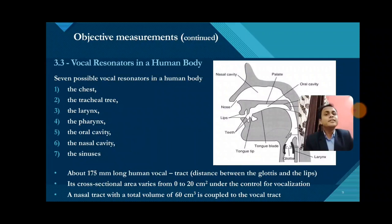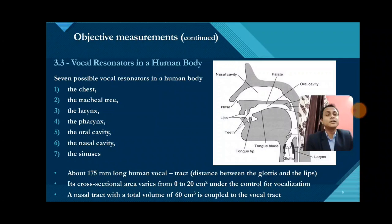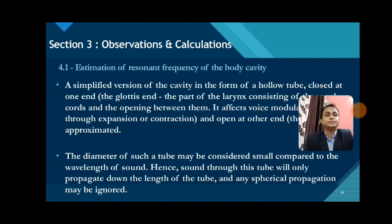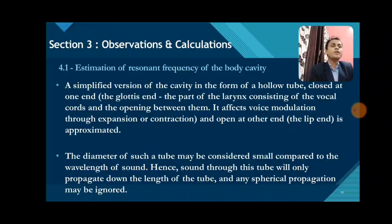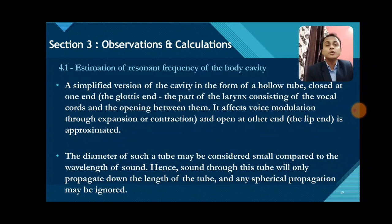There are seven possible vocal resonators in a human body: the chest, the tracheal tree, the larynx, pharynx, oral cavity, nasal cavity, and the sinuses. The distance between the glottis and the lips, which is the human vocal tract, is around 175 mm. The cross-sectional area is about 0 to 20 cm² under control for vocalization, and the total volume of the nasal tract is around 60 cm³, which is coupled to the vocal tract. A simplified version of the cavity in the form of a hollow tube closed at one end — the glottis end — and open at the other end — the lip end — was considered. The diameter of such a tube is small compared to the wavelength of sound, so sound through this tube will only propagate down its length and spherical propagation may be ignored.